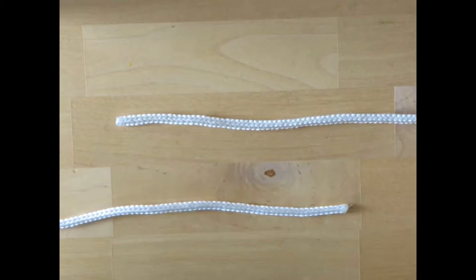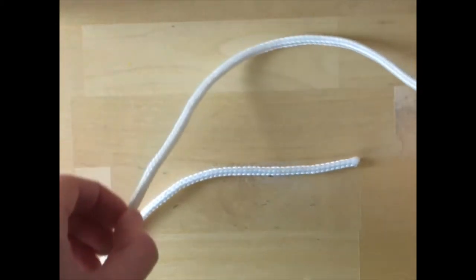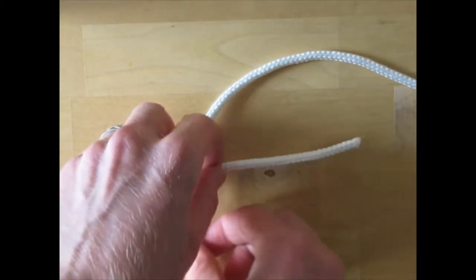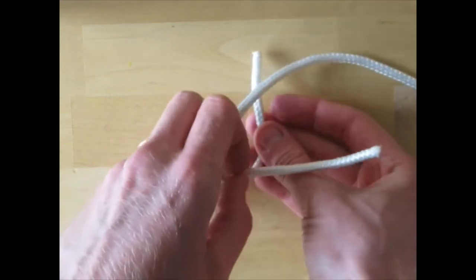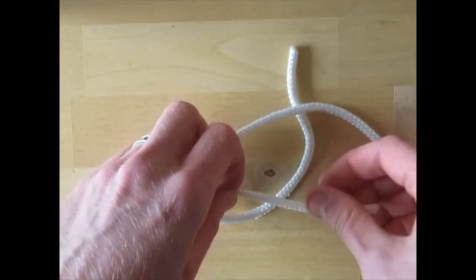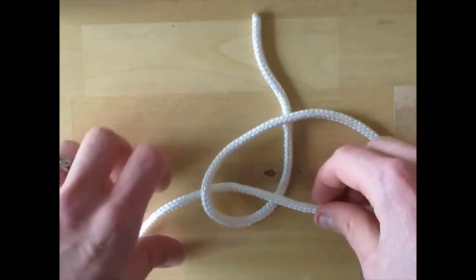Start by putting the two ropes parallel to each other like this. Take the top rope and bring it down, over, and round the bottom rope, and then under the top rope to make a loop like this.